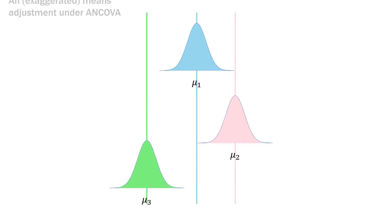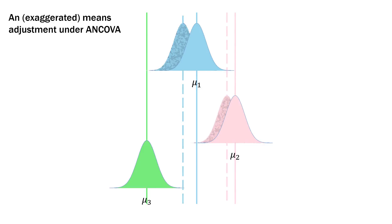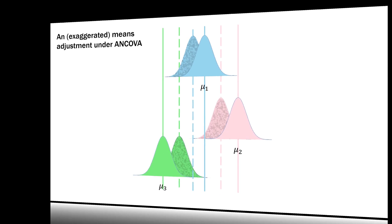Here is an exaggerated visual of ANCOVA. Here are our means to start with; then we introduce the covariate and our means are adjusted. Maybe the first mean goes here, the second mean moves there, and the third mean goes there. The location of the means changes when we adjust them for the fact that all of our participants scored equally on the covariate.